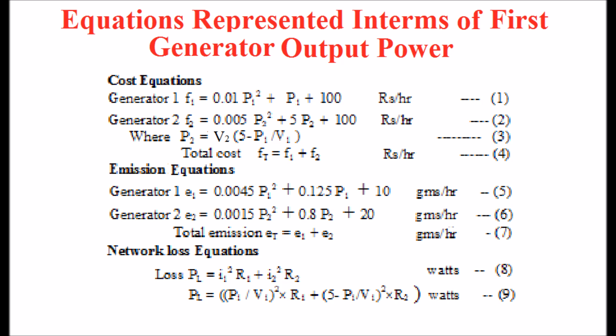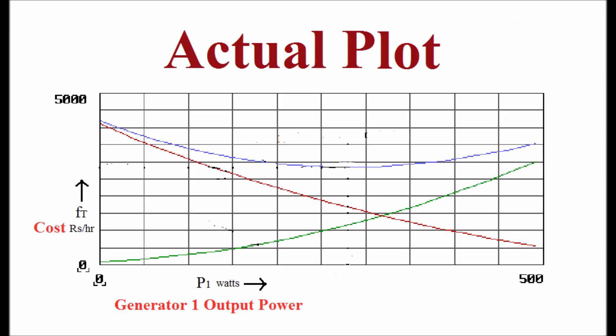The actual plot of cost of plant 1 generation, plant 2 generation and total cost are shown in the display. The minimum cost is Rs 2840.61.